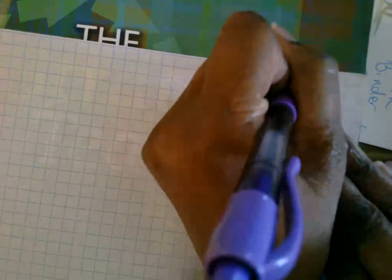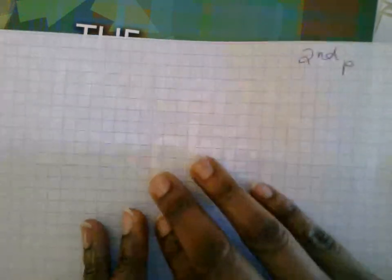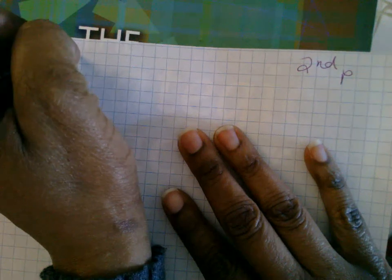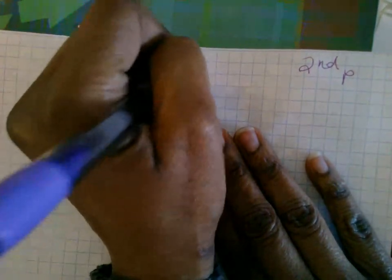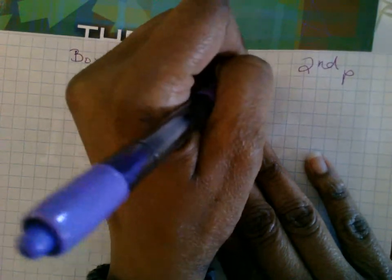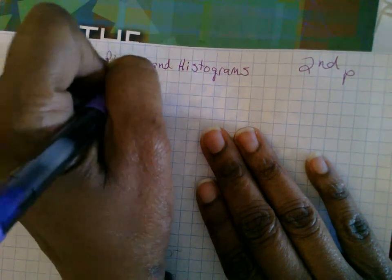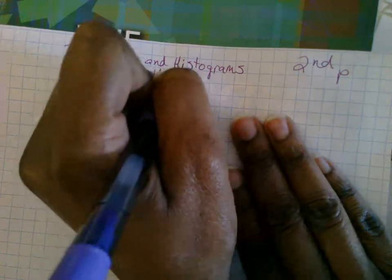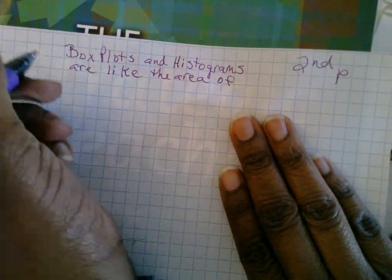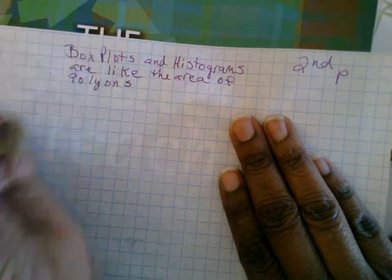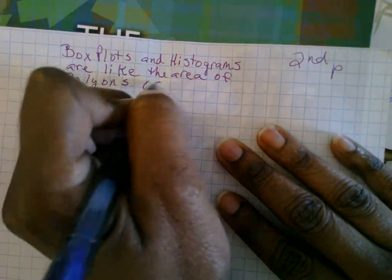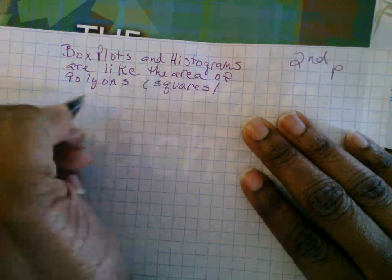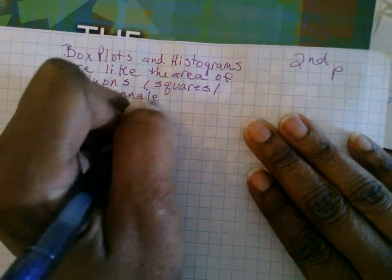Using the paper from yesterday and the graph paper that you have today, go ahead and put your name at the top. And across the top, I want you to write that statement that I just said. Box plots and histograms are like the area of polygons. And we'll just say squares and rectangles because we don't know which ones we're going to end up with just yet.